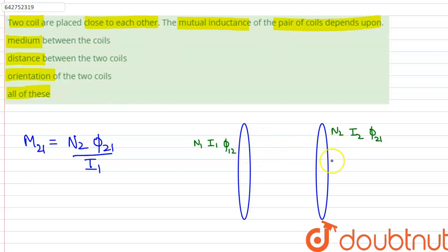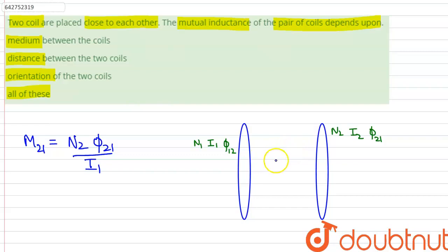Mutual inductance is defined as the proportionality between the EMF generated in coil 2 due to the current flowing in coil 1. Therefore, it depends on the relative position and the orientation of the two coils.